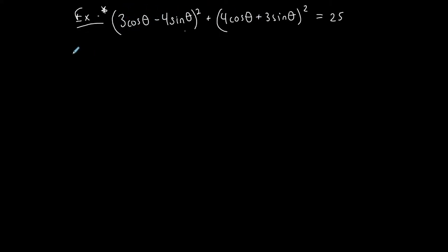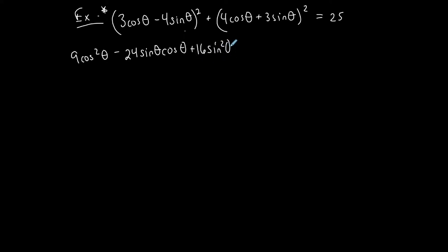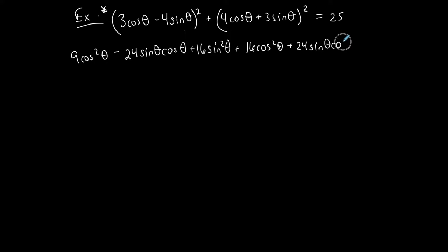So this is 9 cos²θ minus 3 times 4 is 12, times 2 which is 24, so minus 24 sinθ cosθ, and then the last term plus 16 sin²θ. Plus, multiplying out the second binomial: 16 cos²θ plus 24 sinθ cosθ, and then plus 9 sin²θ. And this is supposed to equal 25.